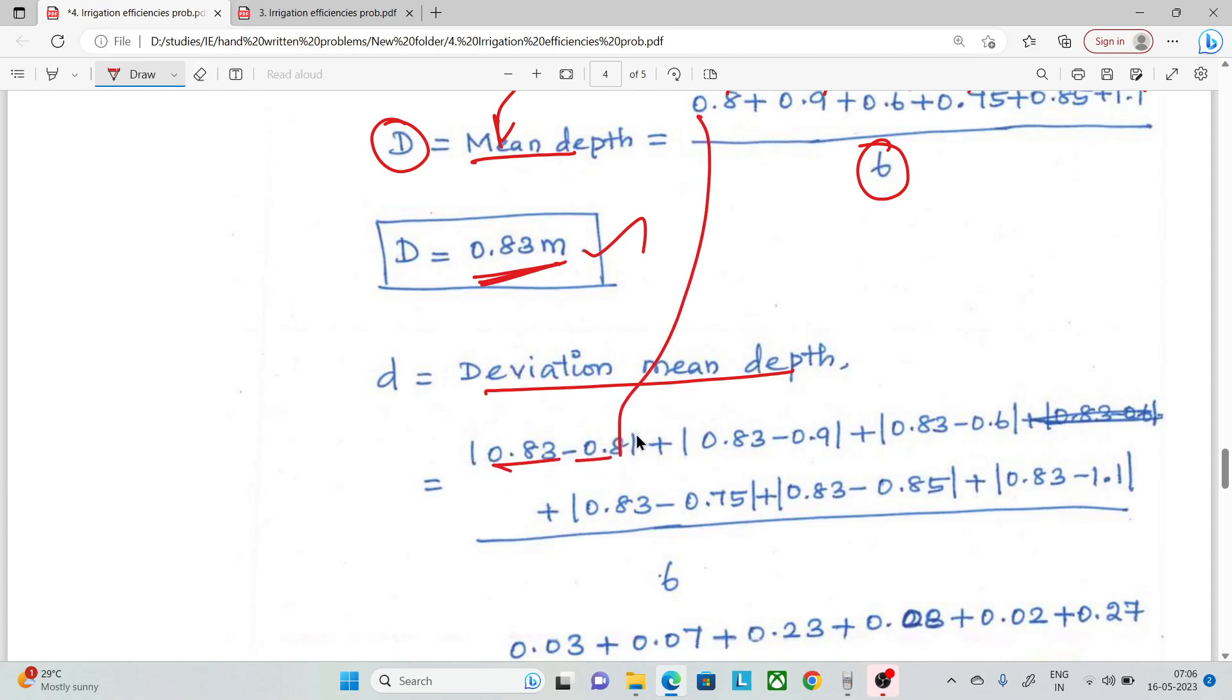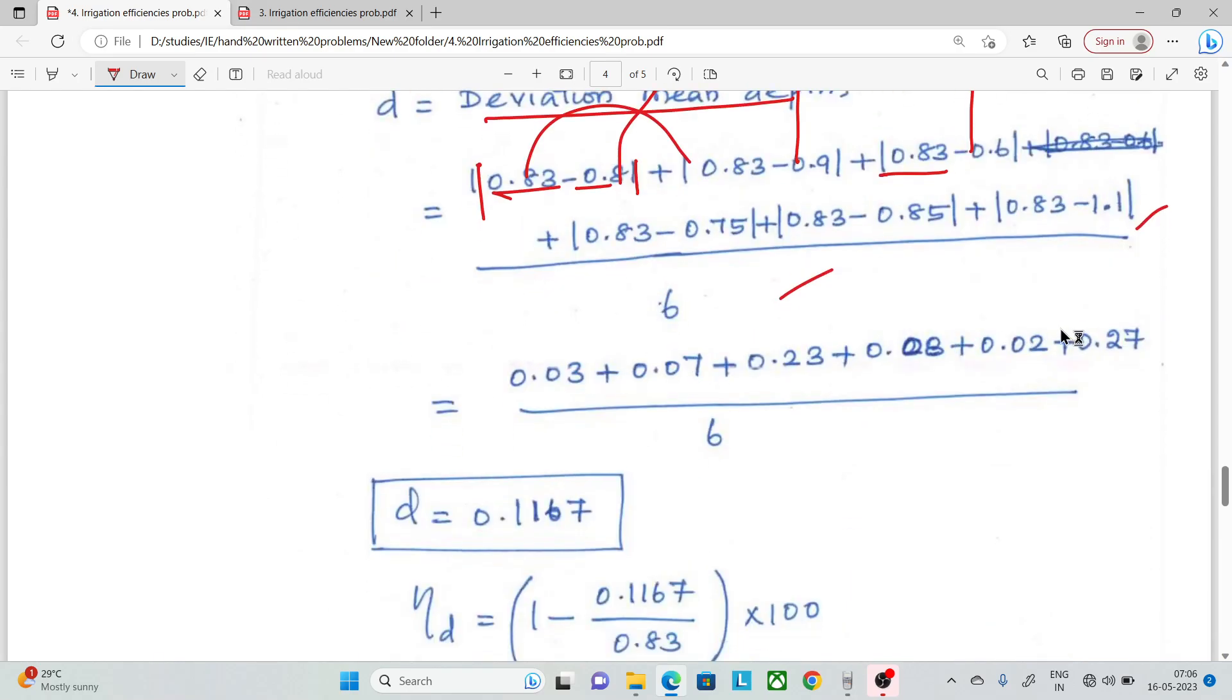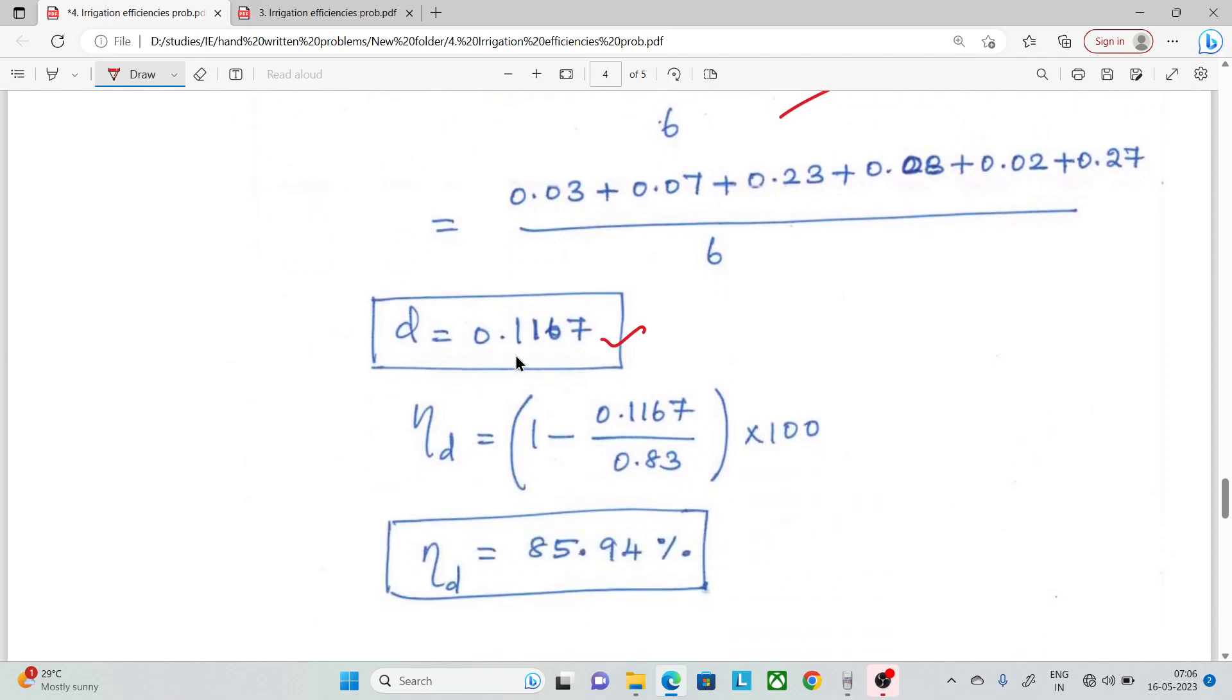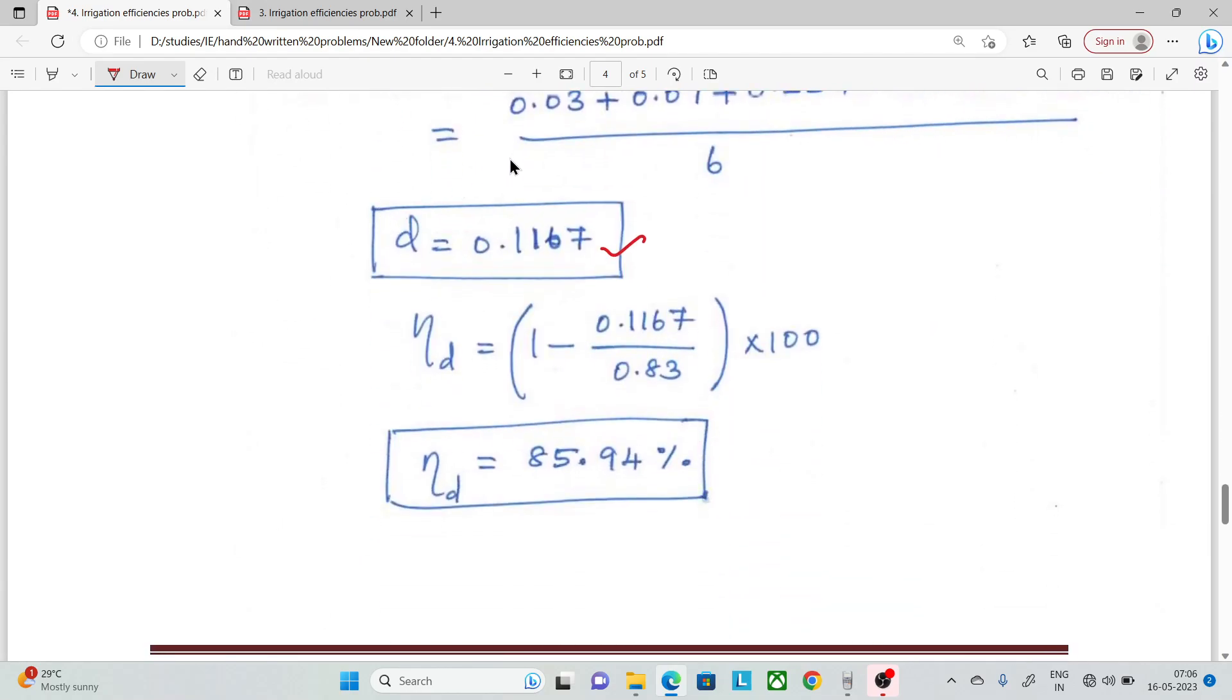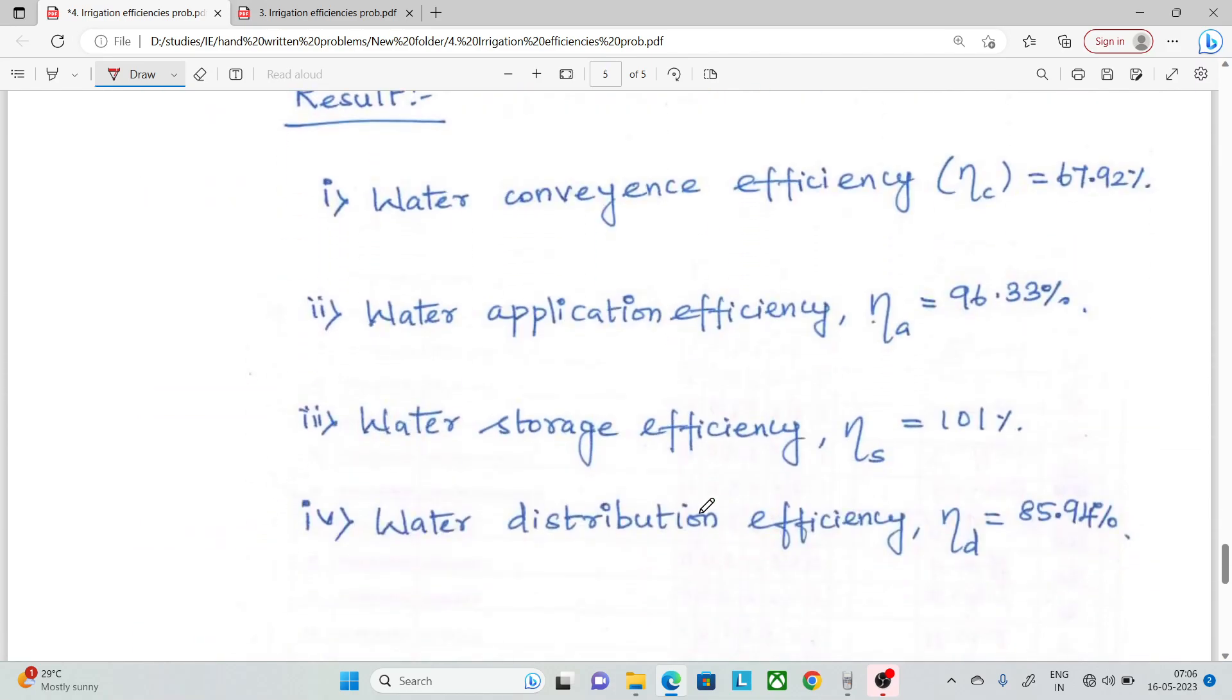The deviation is 0.83 is the original value minus each observation - the absolute value. Plus and minus both become plus. If we add the deviations for 0.8, 0.9, 0.6, 0.75, 0.85, 1.1, then divide by 6, we calculate the value as 0.1167. Substitute in the formula: 1 minus small d by capital D into 100. Small d is 0.1167 and capital D is 0.83 into 100. Solving gives 85.9494 percentage.